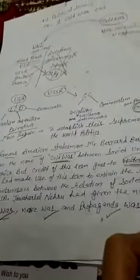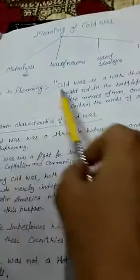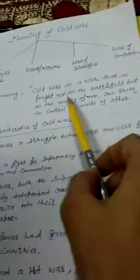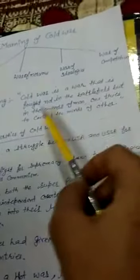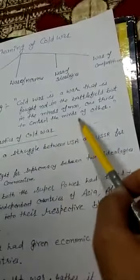Meaning of Cold War. Cold War means mutual war, war of nerves, war of ideologies, war of competition. According to Fleming, Cold War is a war that is fought not in the battlefield but in the minds of men. One tries to control the minds of others.